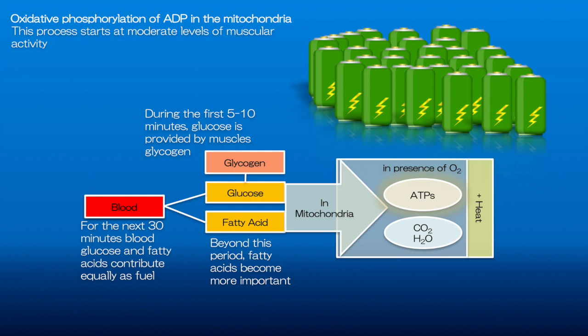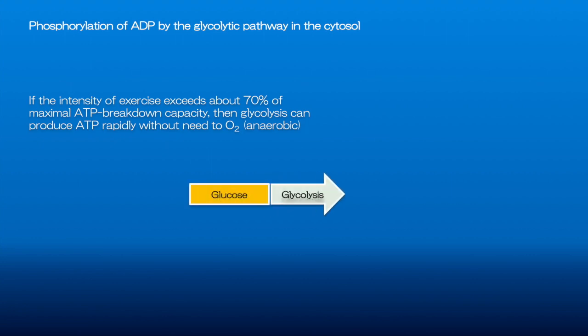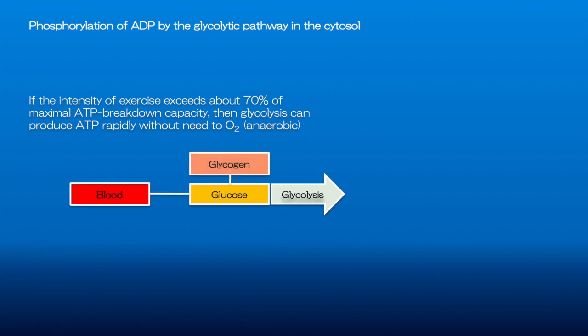If the exercise continues with more intensity — when it exceeds about 70% of the maximum rate of ATP breakdown — glycolysis will contribute an increasingly significant fraction of total ATP generated by the muscle. This process can produce ATP very rapidly when all the enzyme substrates are present in the cell, and it can do so in the absence of oxygen, so it's an anaerobic condition. The glucose for glycolysis can be obtained from two sources: the blood or the stores of glycogen in the muscle fiber.